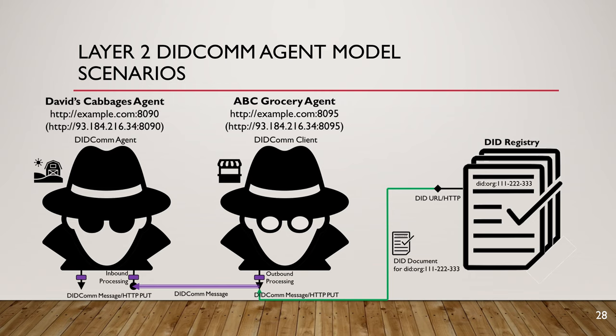In the example, ABC Grocery looks up David's Cabbages — DID colon org colon 111222333 — in the DID registry to get their DID document, then extracts the service endpoint. ABC Grocery's agent sends the authenticated encrypted message from right to left. Outbound processing does the authenticated encryption, and David's Cabbages' agent inbound processing does the decryption and authentication.